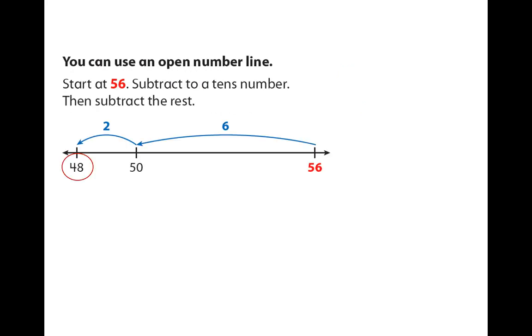You can also use an open number line. You can start at 56 and then subtract a tens number and then subtract the rest. Well, if I start at 56 and I count back to 50, that's taking away six. But I only took away six. I need to take away eight. Now, if I take away an extra two, I end up at 48.